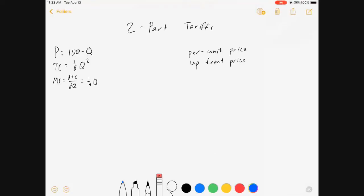By setting up these two-part schemes, we can make a lot of money. So I want to look at a market where each customer has the demand curve P equals 100 minus Q, and there's a total cost function 1/8 Q squared. Derive that marginal cost, which is 1/4 Q.